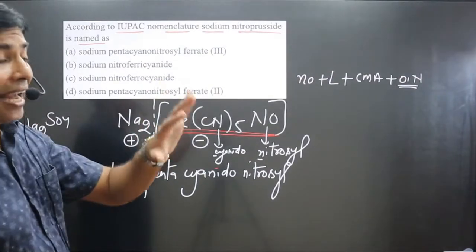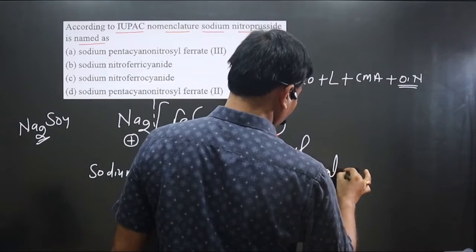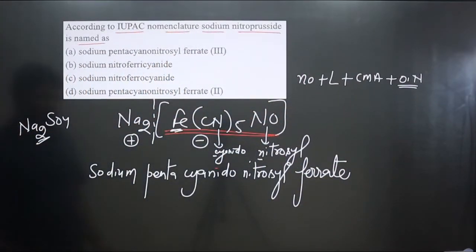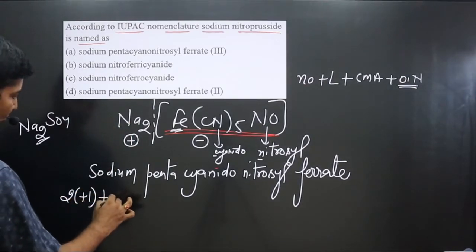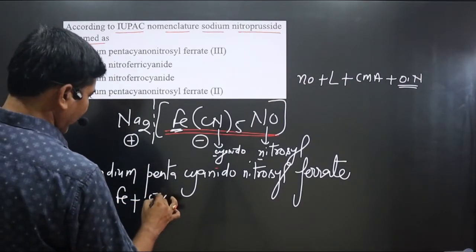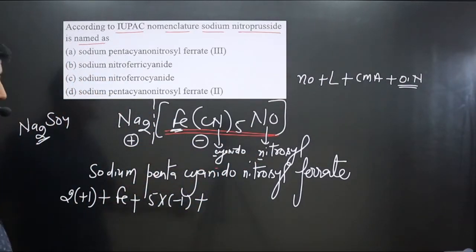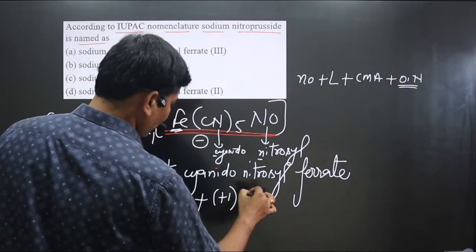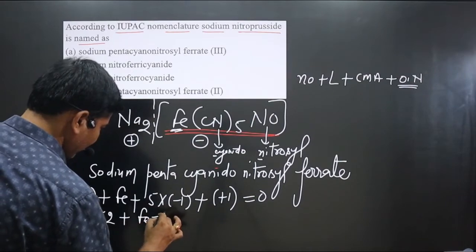Then we have the central metal atom, which is present in the anionic part, so we use its special name: ferrate. Now we calculate the oxidation number. Each sodium is +1, so two sodiums give +2. We have five cyanide ligands each with −1, and nitrosyl carries a +1 charge.